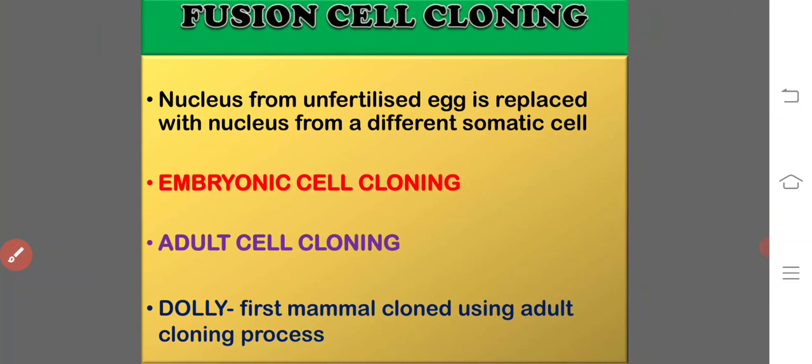Fusion cell cloning is a process in which the nucleus from an unfertilized egg is replaced with the nucleus from a different cell. If the nucleus of the egg cell is replaced with an embryonic cell, it is called embryonic cell cloning. If the nucleus is replaced with an adult cell, it is called adult cell cloning. The sheep Dolly was the first mammal to be cloned using adult cell cloning.